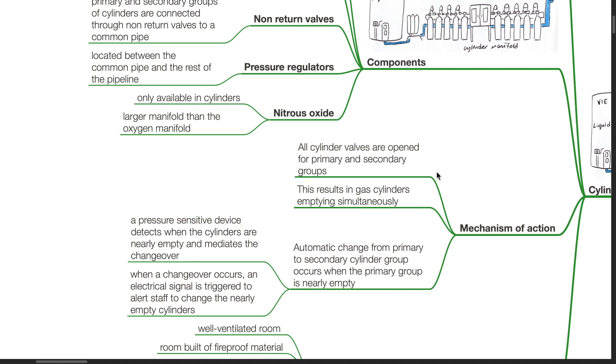This results in gas cylinders emptying simultaneously. Automatic change from the primary to the secondary cylinder group occurs when the primary group is nearly empty. A pressure sensitive device detects when the cylinders are nearly empty and mediates the changeover. When a changeover occurs, an electrical signal is triggered to alert the staff to change the nearly empty cylinders.